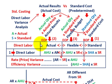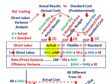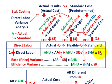Now let's look at our variances. We're going to work with a rate or price variance and also an efficiency variance. For each of these, we're computing some quantity of direct labor times some price. Our actual amount is actual hours used times the actual labor rate. Our flexible amount is actual hours times the standard rate. And our standard amount is standard hours allowed for the product times the standard labor rate.